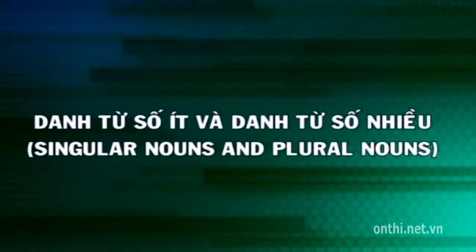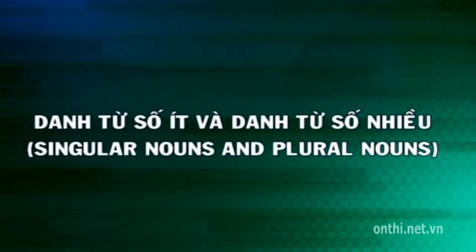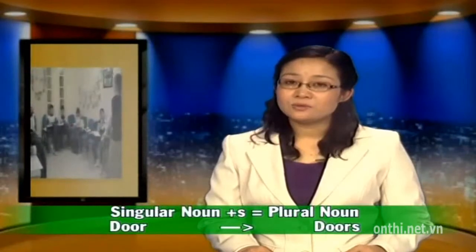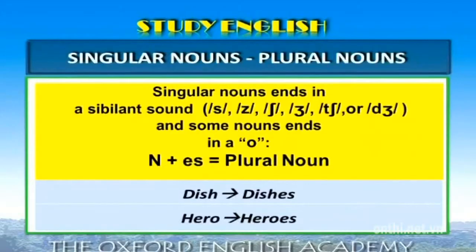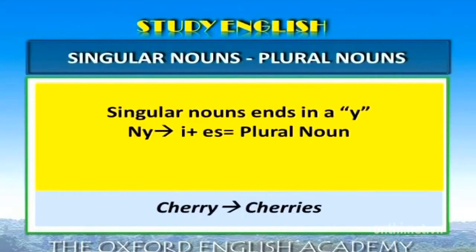Quý vị và các em thân mến, bây giờ chúng ta cùng tìm hiểu kỹ hơn về danh từ số ít và danh từ số nhiều. Cách hình thành số nhiều của danh từ đơn là thêm -s vào đuôi danh từ số ít. Ví dụ, door là danh từ số ít, khi thành số nhiều ta chuyển thành doors. Tuy nhiên có một số trường hợp cần chú ý. Thứ nhất, khi chuyển danh từ từ số ít kết thúc bằng phụ âm sát như s, z, sh và một số danh từ kết thúc bằng chữ cái o, thì ta thêm -es để có danh từ số nhiều. Khi chuyển danh từ số ít kết thúc bằng chữ cái y, thì ta chuyển y thành i và thêm -es để có danh từ số nhiều.